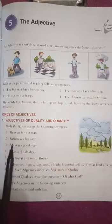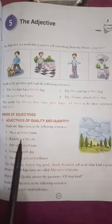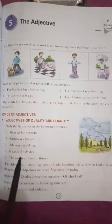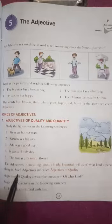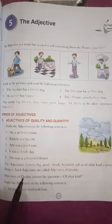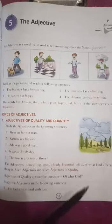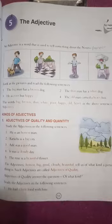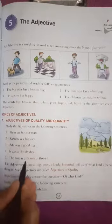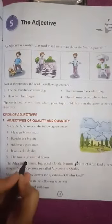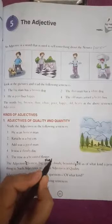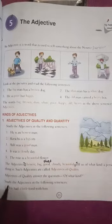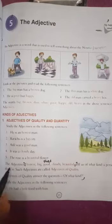First: adjectives of quality. Study the adjectives in the following sentences: 'He is an honest man. Karachi is a big city. Nadal was a good man. It was cloudy today. The rose is a beautiful flower.' The adjectives honest, big, good, cloudy, and beautiful tell us what kind of person or thing is being described. Such adjectives are called adjectives of quality. Adjectives of quality answer the question 'of what kind?'